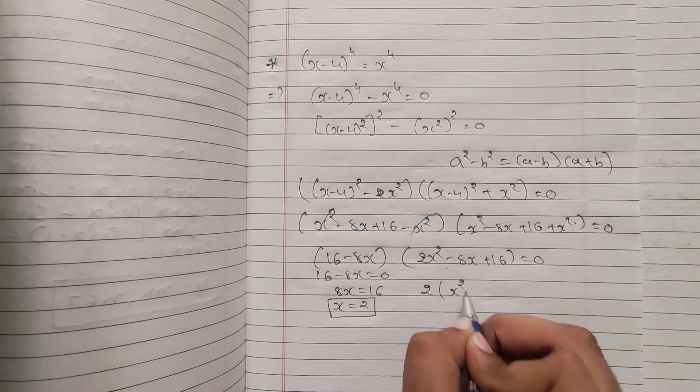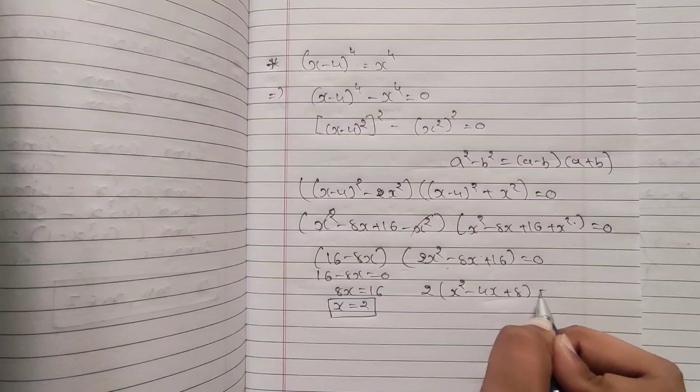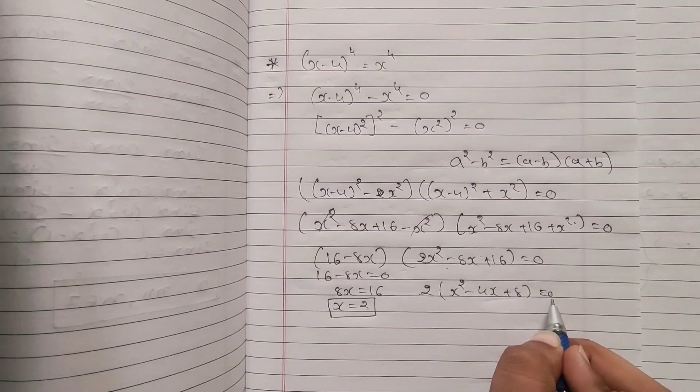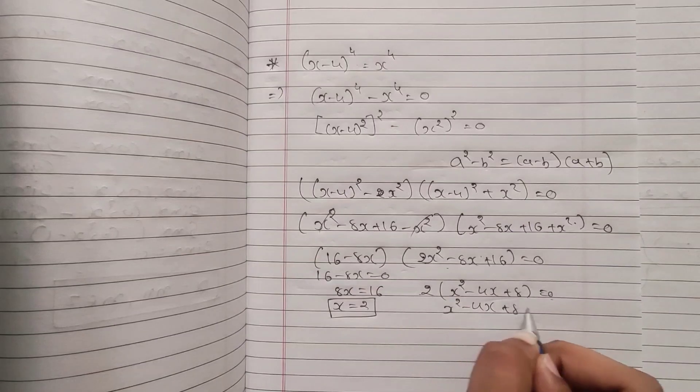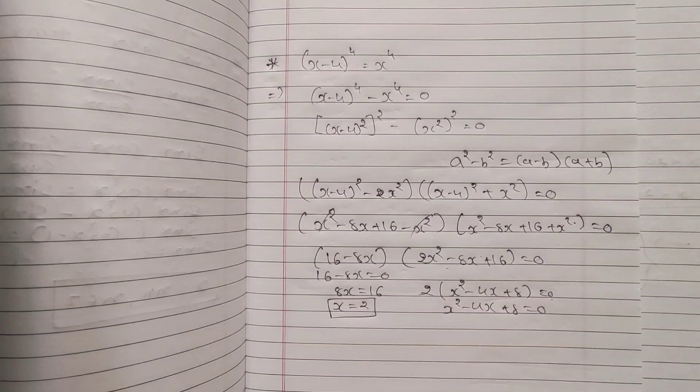What will remain? x² - 4x + 8 = 0. Now 2 will go in the denominator. So it becomes x² - 4x + 8 = 0, because 0 divided by 2 equals 0.